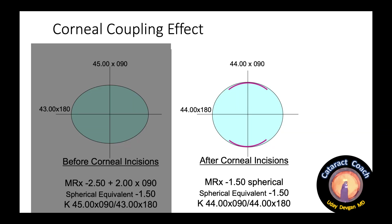Now we make our treatments. Look at the after — the corneal incisions on the right. The average corneal power is still 44, but we've neutralized all two diopters of astigmatism. Look at the refraction: the spherical equivalent is the same, minus 1.50. So this teaches us that treating the astigmatism with these relaxed incisions keeps the average corneal power the same and keeps the spherical equivalent of the refraction the same.